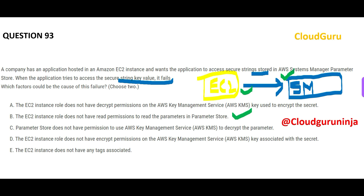We have to choose two reasons. The second scenario: the boy calls the girl, the girl picks up, but the boy talks in English and the girl doesn't know English. That is an encryption/decryption problem — the EC2 instance does not have decrypt permissions. So this is my second answer.